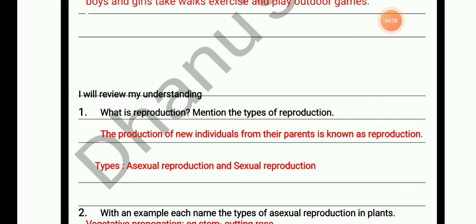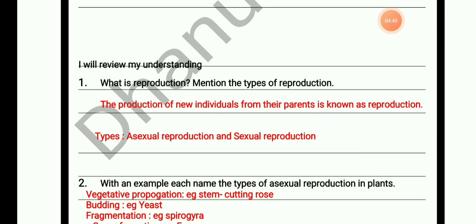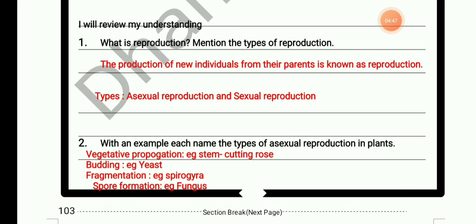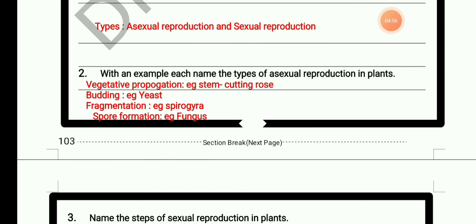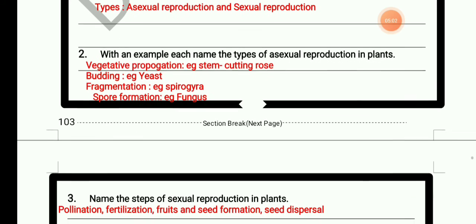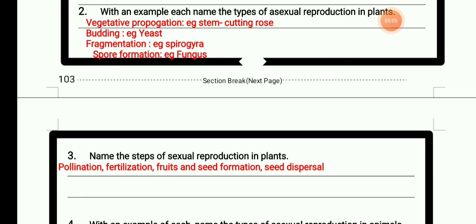Review questions: What is reproduction? Mention the types of reproduction. The production of new individuals from their parents is known as reproduction. Types: sexual reproduction and asexual reproduction. Types of asexual reproduction with examples: vegetative propagation, budding, fragmentation, and spore formation. Steps of sexual reproduction in plants: pollination, fertilization, fruit and seed formation, and seed dispersal.